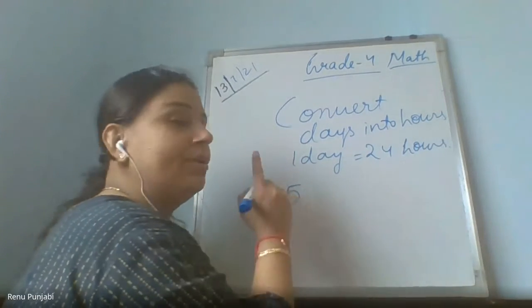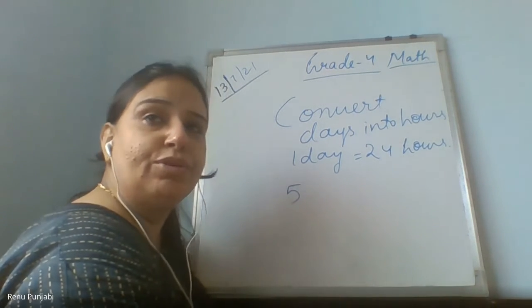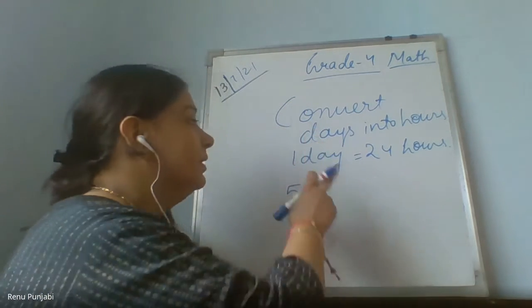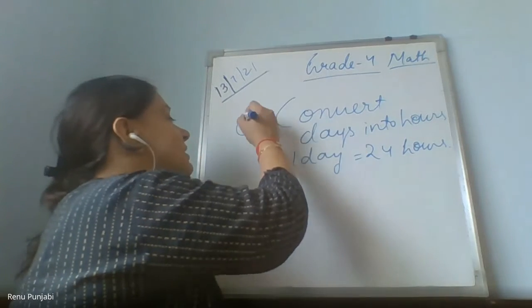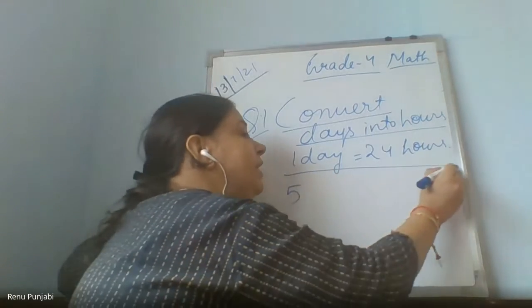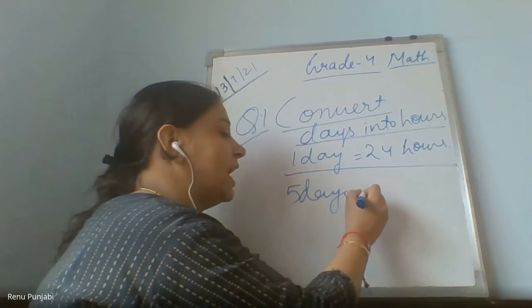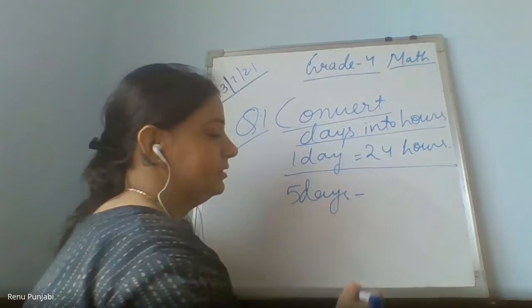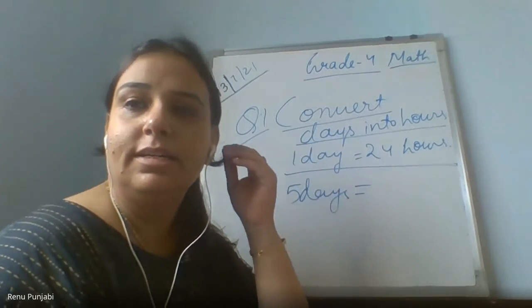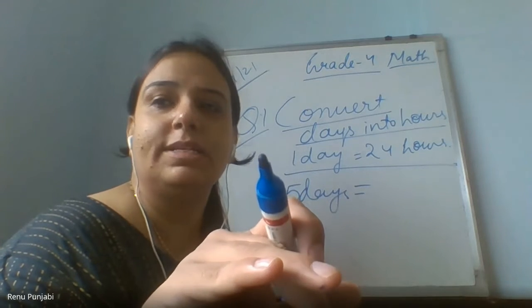I will give you time to write — just understand first, then I will ask questions, then we will write in the notebook. Our question is: convert days into hours. If I say convert days into hours, you know one day equals 24 hours. So five days equals how many hours?